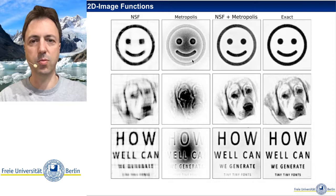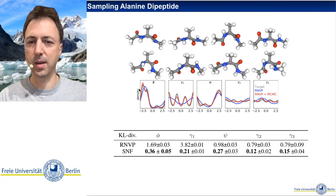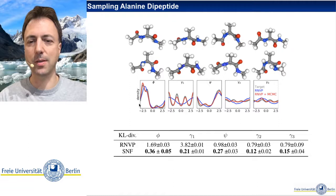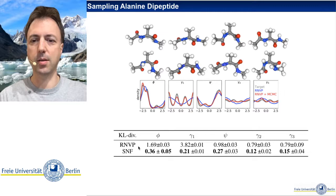We also use stochastic normalizing flows to sample configurations of molecules — here alanine dipeptide. Comparing the probability distribution in certain marginals such as the distribution of torsion angles, the stochastic normalizing flows do much better than the deterministic flows.